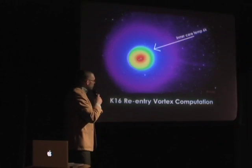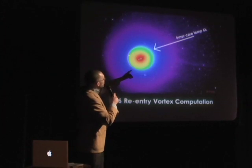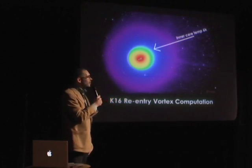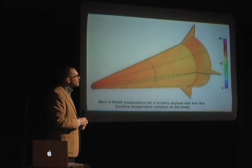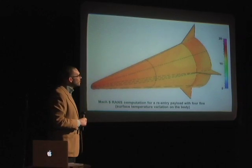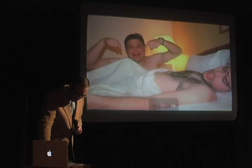And on this slide, we can see that the K-16 re-entry vortex — this is an aerial shot here. And as you'll notice, the inner core temp is around 6 Kelvin. Thank you, Dr. Fryman. Okay, this is a log-8 RANS commutation for re-entry. You'll notice here that the tip of the projectile is diversified all the way to the stabilization fins. You'll notice that we never hit above 10 Kelvin, and that's the surface temperature variation that's also consistent.